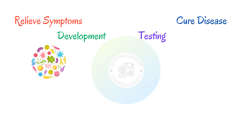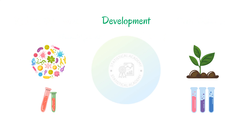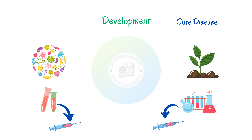Luckily for us, microorganisms and plants have been evolving for millions of years and along the way they have also evolved to produce a range of substances that are able to do all sorts of things, including killing pathogens. This means that instead of having to develop all of our drugs from scratch, we have been able to take these substances from them and either use them directly as medicines, or sometimes modify them in a lab first and then use them as medicines.